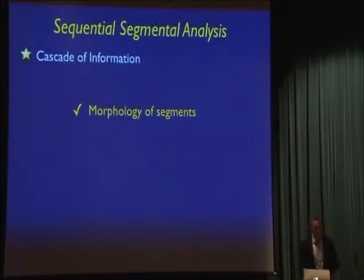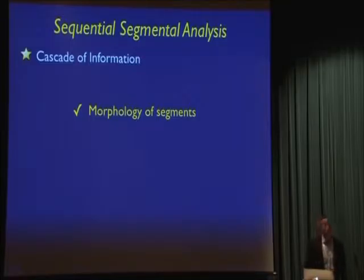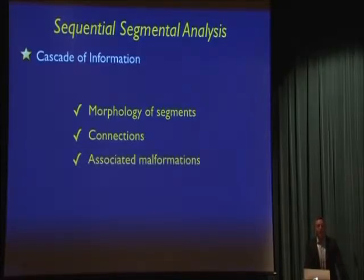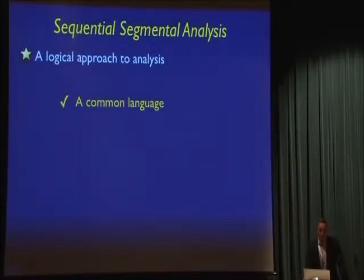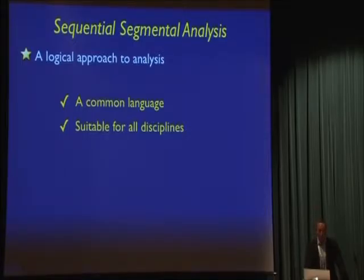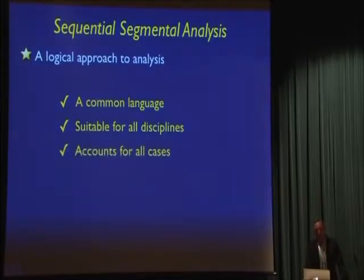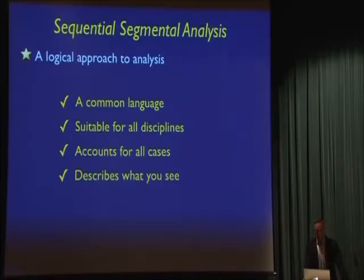What we've shown is that we build up a cascade of information in a logical manner: we look at the morphology of the segments, which enables us to work out the connections between the segments, and on top of that we look at all associated malformations. This gives us a very logical way of approaching the heart — a language that can be used across disciplines, to speak to parents, to molecular cardiologists discussing mouse knockout models — and it should account for all cases because it simply describes what you're seeing.